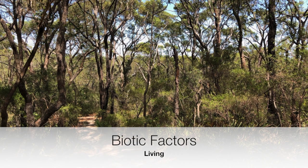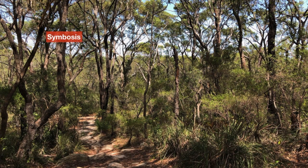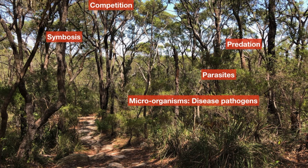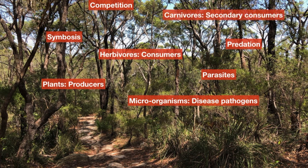The biotic, or living, factors that affect an ecosystem are many and varied, with living things working both with and against each other in order to survive. Interactions between living things are all at play even if we can't always see it. The particular way in which an organism interacts with other living things will depend on whether they are a producer, a first order consumer, a second order consumer, or a decomposer.